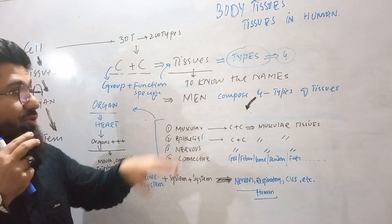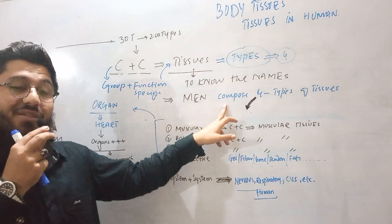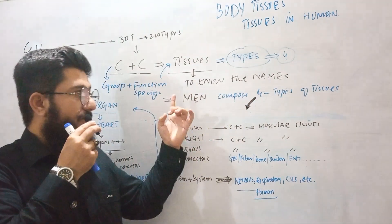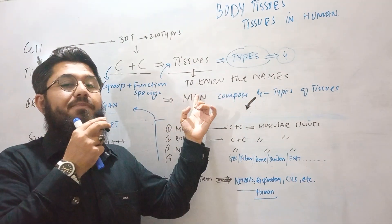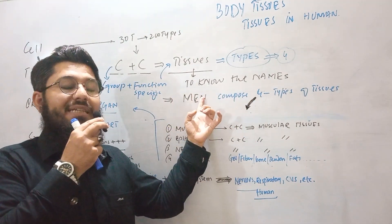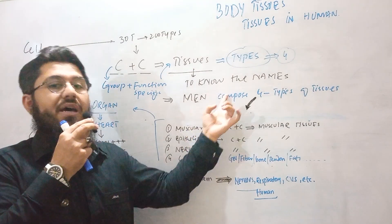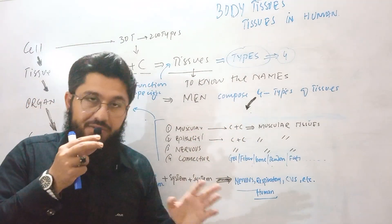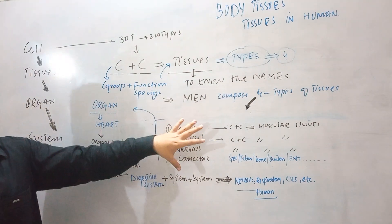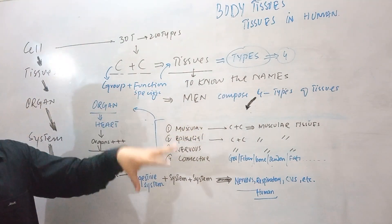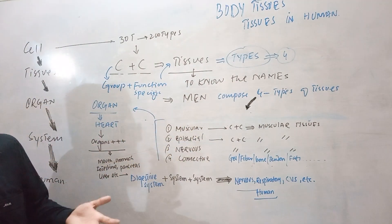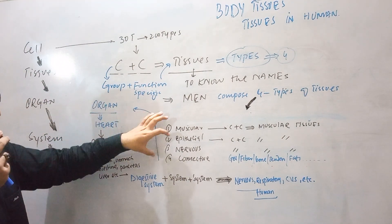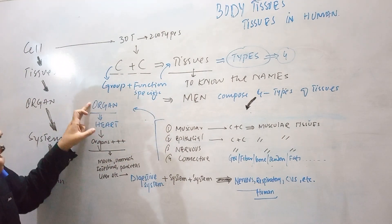You will not forget the tissue types because you have got the particular sentence: 'Men compose four types of tissues' — M-E-N-C: muscular, epithelial, nervous, and connective. Now, these tissues group together, they perform specialization, they do a specific job, and then they form an organ. So tissues group together and form an organ.